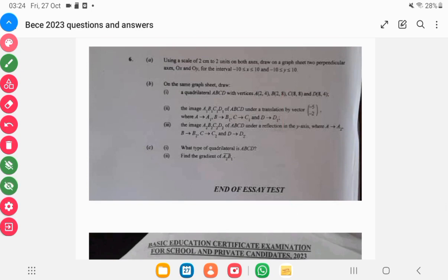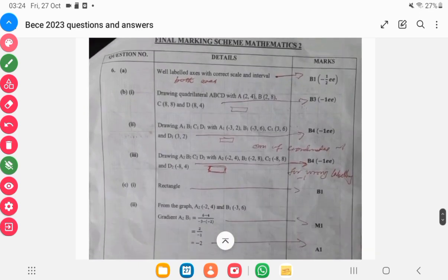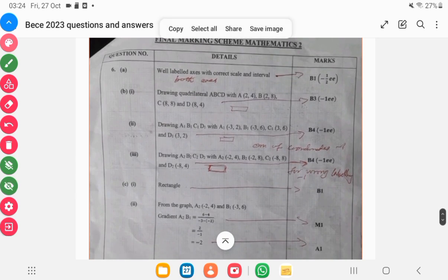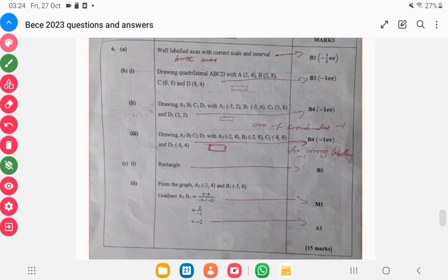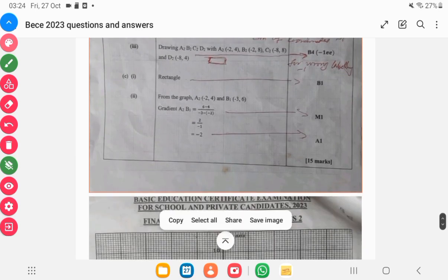So looking at the question, you are supposed to do a translation and reflection in the y-axis. The reflection in the y-axis is negative x. You also have to find the gradient.